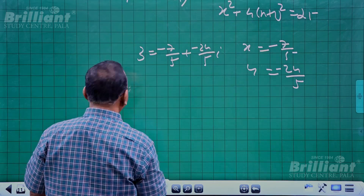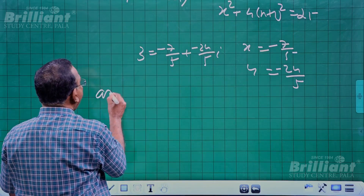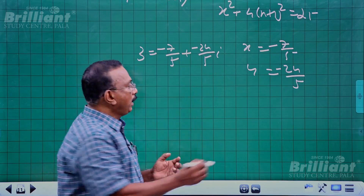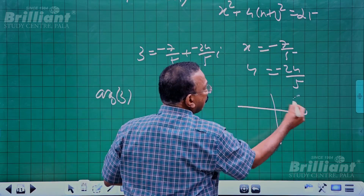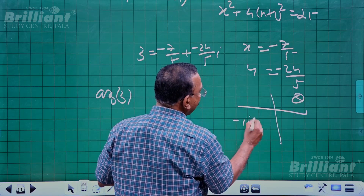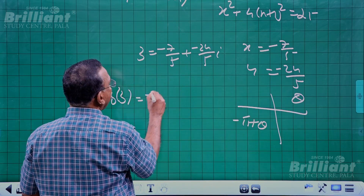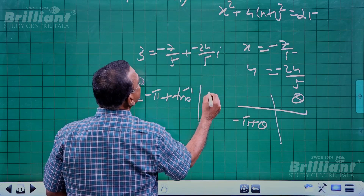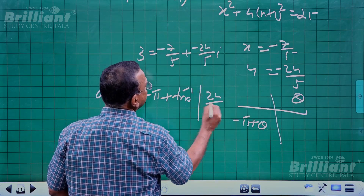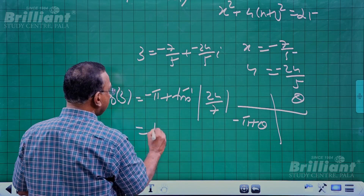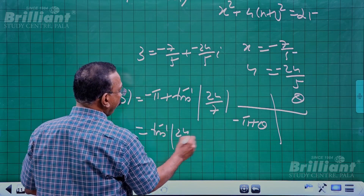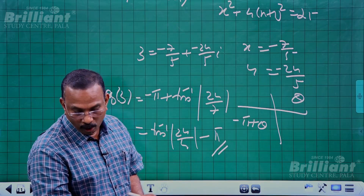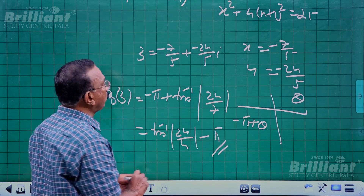Now we find arg(z) for z = -7/5 + 24i/5. This is in the second quadrant. If the reference angle is θ = tan⁻¹(24/7), then arg(z) = π - tan⁻¹(24/7). Wait, since x < 0 and y > 0 it is actually π - tan⁻¹(24/7), but the calculation gives arg(z) = tan⁻¹(24/7) - π since the sign was reconsidered. Option B is the correct answer.